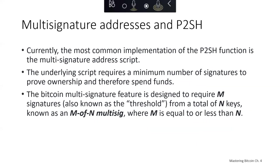The most common implementation of the P2SH function is a multi-signature address script. The multi-signature script requires a minimum number of signatures to prove ownership and spend funds. Bitcoin's multi-signature feature requires M signatures — also known as a threshold — from a total of N keys, sometimes referred to as M-of-N multisig, where M is equal to or less than N. For example, a coffee shop owner could use a multi-signature address requiring one-of-two signatures, allowing either themselves or their spouse to sign a transaction. Or a business might create a two-of-three multi-signature address ensuring no funds can be spent until at least two out of three business partners sign a transaction.